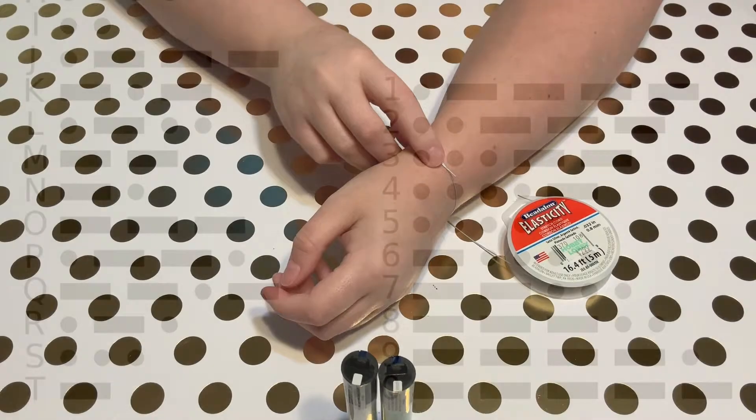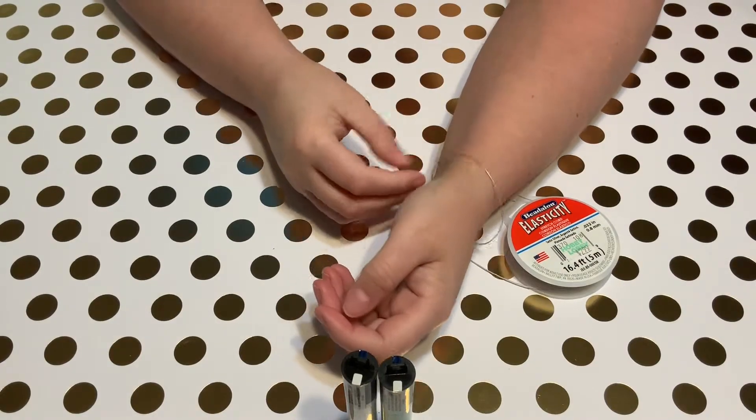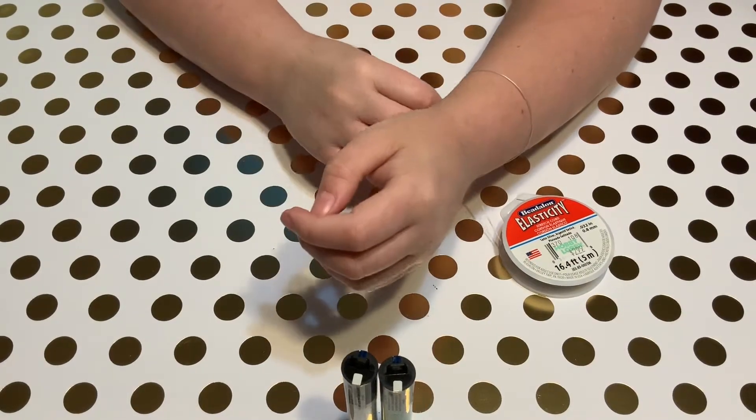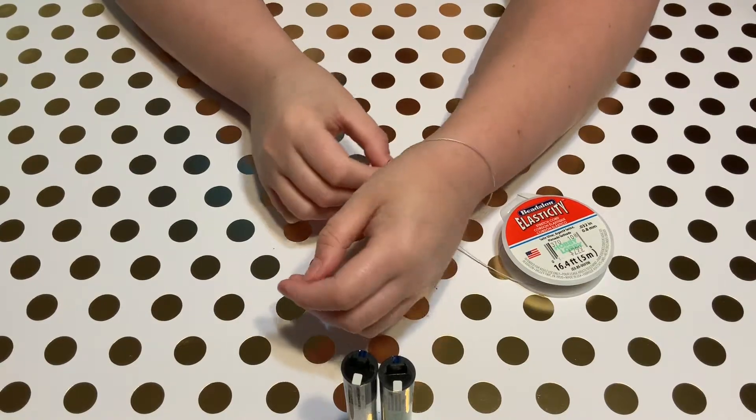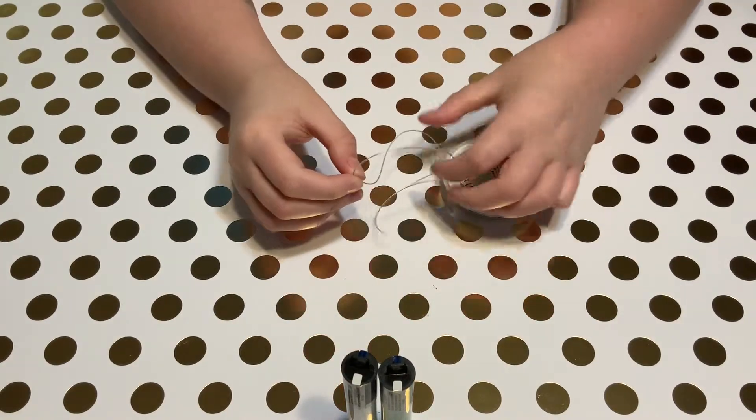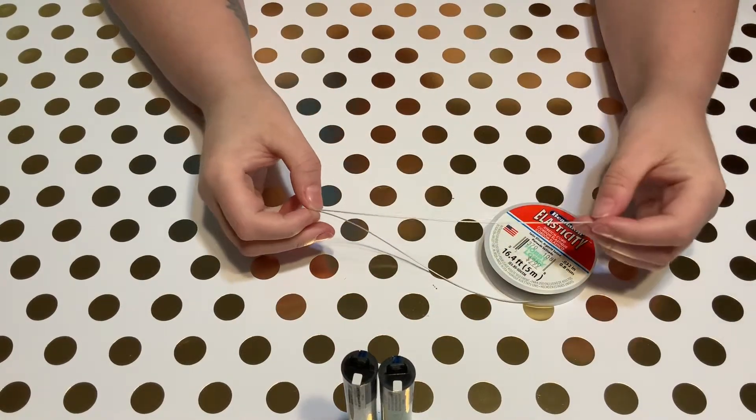To begin making my bracelet, I measured out how much cord I would need. I'm using stretchy cord because I want to be able to put the bracelet on over my hand and so I don't have to tie it around my wrist each time.